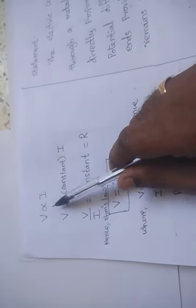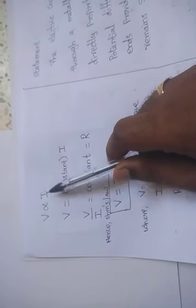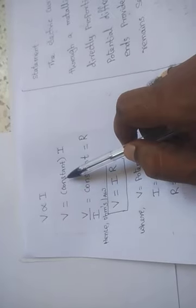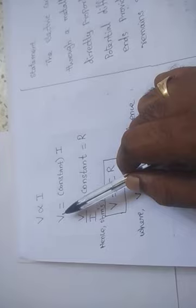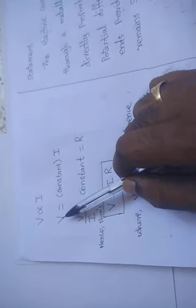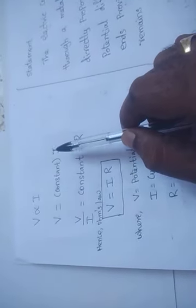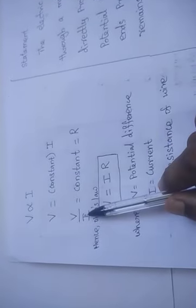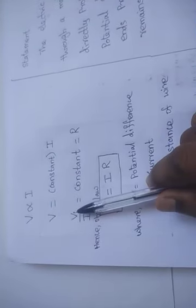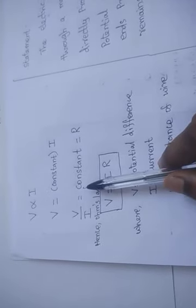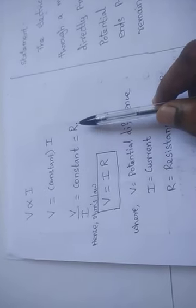As voltage is directly proportional to the current, whenever we remove the proportionality, we have to put a constant value. That is, V is the potential difference and it is equal to the constant multiplied by the current value I. If you bring I to the denominator, V by I is equal to a constant — and that constant is resistance.